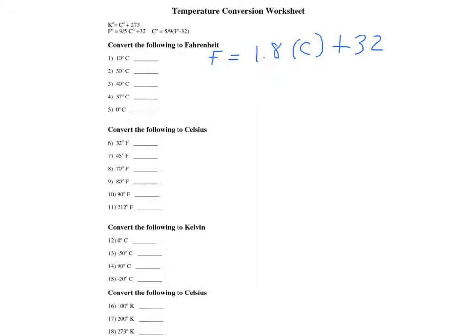With our next group, we would convert the following to Celsius. So we have Celsius equals. We are converting between Celsius and Fahrenheit. Here we would have 0.55 times Fahrenheit minus 32.